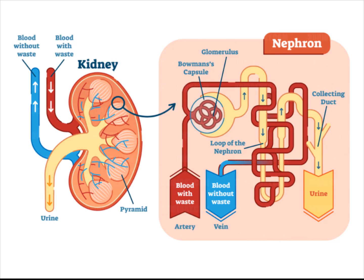Urine is formed through filtration, reabsorption, secretion, and excretion. Items which are not filtered include proteins and red blood cells. Waste including uric acid and urea is removed from blood in the glomerulus. Reabsorption occurs of some substances such as salts, excess water, amino acids, and glucose that are filtered together with nitrogenous waste that are needed by the body. Reabsorption occurs in the proximal convoluted tubule of the nephron into the peritubular capillaries and back into circulation.